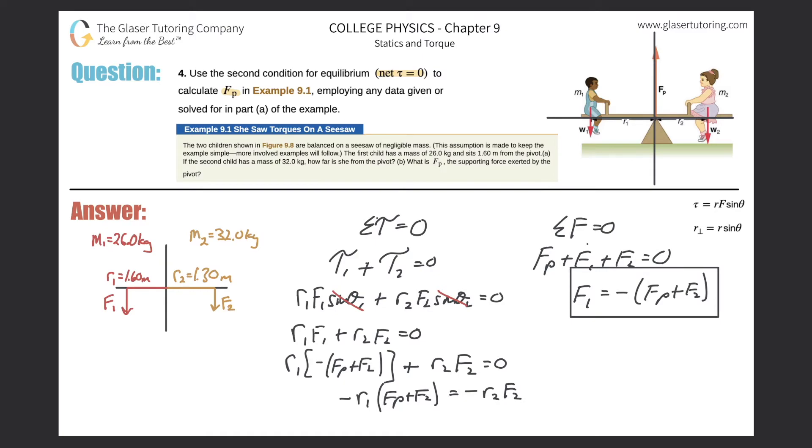Divide out now the R sub one, negative R sub one across both sides. So now we'll get this result that F sub P plus F sub two is equal to positive now because the double negatives will cancel. R sub two F sub two all over R sub one.